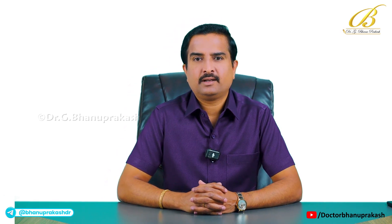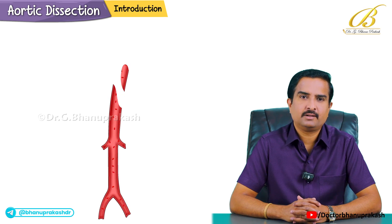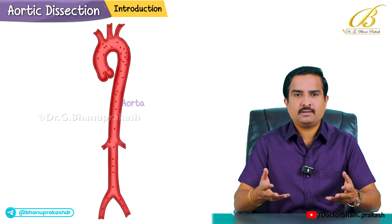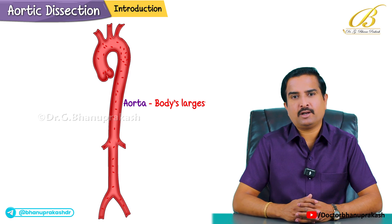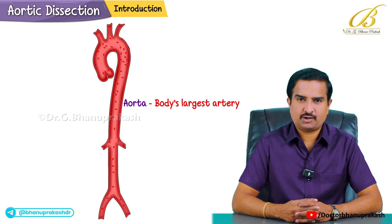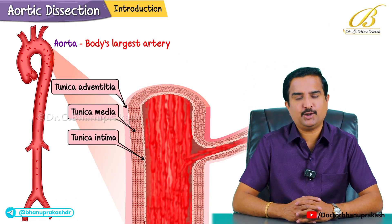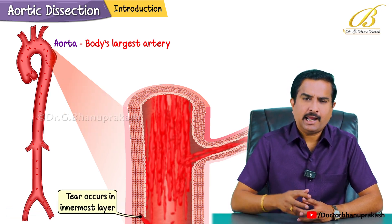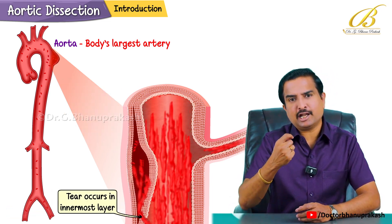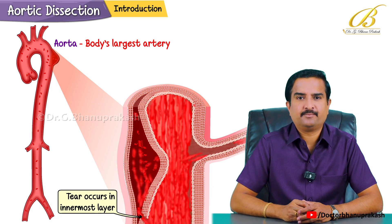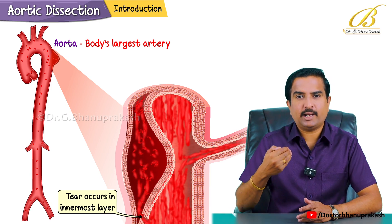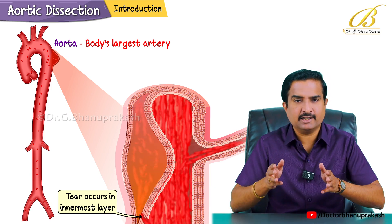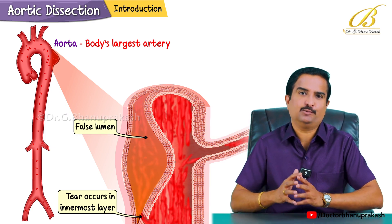Let's dive into a critical topic today: aortic dissection. Imagine the aorta, our body's largest artery, as a three-layer tube. In an aortic dissection, a tear occurs in the innermost layer, allowing blood to enter and separate the layers, forming a false lumen.